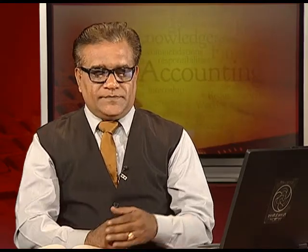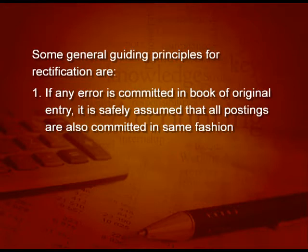We can have some general guiding principles for rectifications. First, if any error is committed in the books of original entry, it is safely assumed that all the postings are also committed in the same fashion. Suppose I record 500 instead of 5,000 in the original entry — it means the posting is also 500; both are wrong.